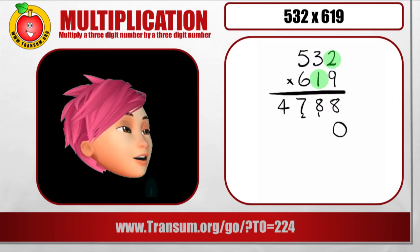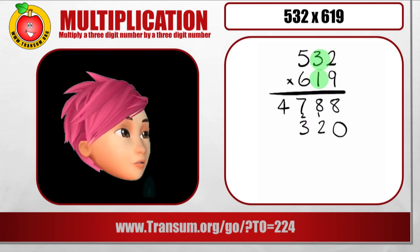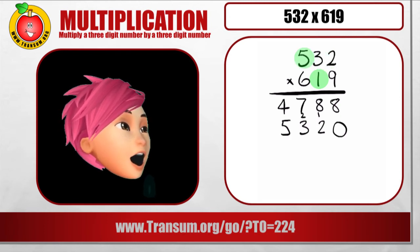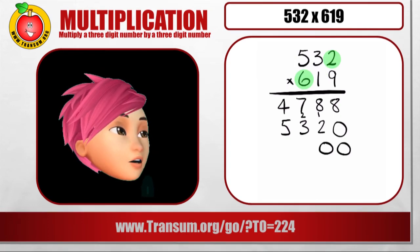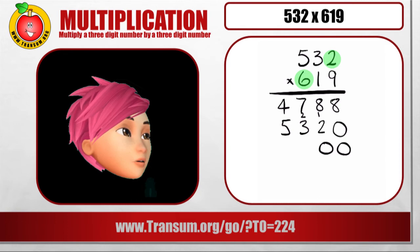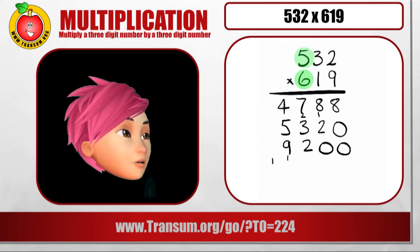Now we're going to multiply by the 1 in the tens columns. So we put a 0 there and then we just multiply by 1. Well that's easy. And finally we're going to multiply by the 600. So we'll put 2 0's there and then just multiply by 6. So 6 2 is a 12. Carry the 1. 6 3 is a 18. Add on that 1 is 19. 6 5 is 30. Add on the 1 is 31.